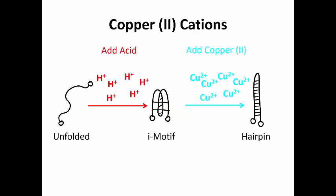We previously showed that you can also change the shape of DNA into a different structure called a hairpin. To do this, we just need to add copper 2 salts. This expanded the DNA into two switches instead of one. There is another YouTube video to explain this in more detail.